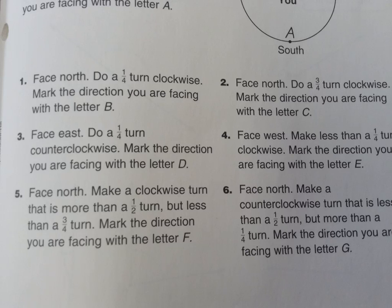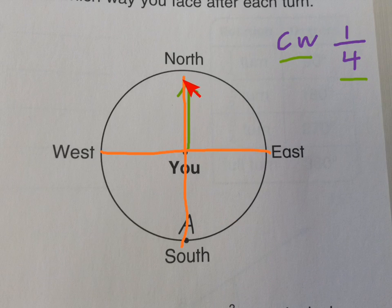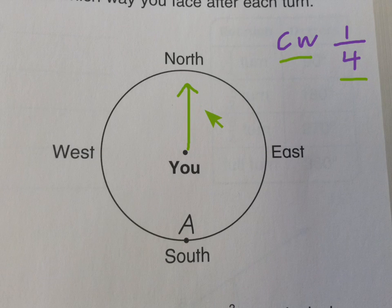Number one says: face north, do a one-fourth turn clockwise, and mark it with the letter B. You're standing in the middle of the circle facing north, and CW means clockwise. Remember, one-fourth of a turn divides the circle into four parts — just one section. So going clockwise by one-fourth of a turn, you go this way by one section, and mark the letter B.